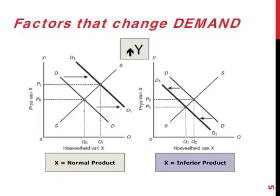Here are a few examples with the graphs shown as well. Let's say there is an increase in income. This leads to an increase in the demand for normal products — the whole demand curve moves towards the right. There is an increase in the equilibrium price and an increase in the equilibrium quantity.